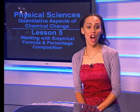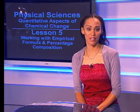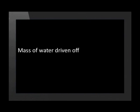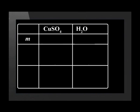We start by finding the mass of the water from the experimental data. The mass of the water driven off from the solid crystals is equal to 24.9 minus 15.9, leaving us with 9 grams of water. So we have a mass of 15.9 grams of copper sulfate and 9 grams of water.